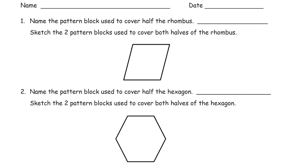So let's see. Sketch the two pattern blocks used to cover both halves of the rhombus. So I could just do this. The pattern block used to cover half of the rhombus, those would be, the rhombuses would be blue. And it takes two green triangles. So a triangle.